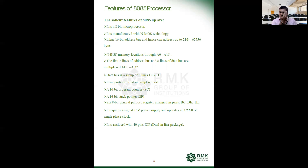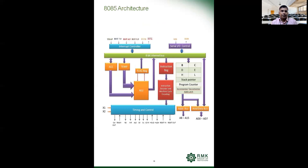Now let us focus on the architecture of the 8085 processor, which is the main topic of this video. Architecture represents the graphical as well as the planar orientation of all the components which are part of the processor. Since it is a processor, there is an Arithmetic and Logic Unit which operates as the brain of the processor. The ALU is the fundamental unit of any processor, which performs all arithmetical and logical operations.